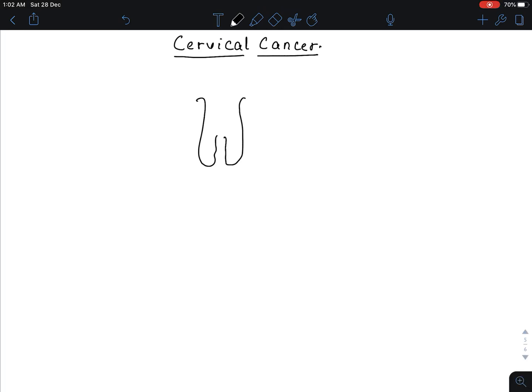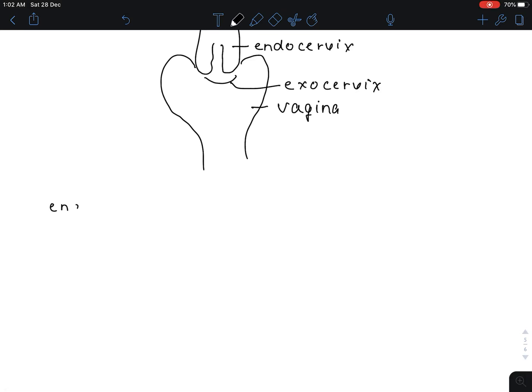This is the cervix and this is the vagina. This part is known as endocervix and this part opening to the vagina is known as exocervix. Endocervix is lined by columnar epithelium.